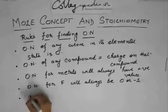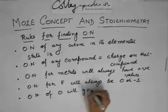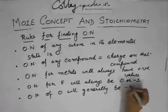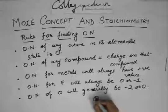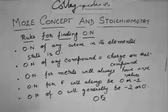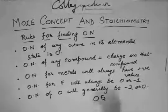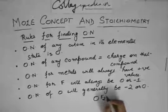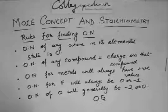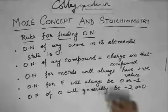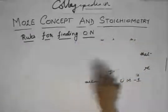The oxidation number of oxygen will generally be minus two or zero. But it can be plus two in the compound OF2. Although OF2 is not very stable because it has two very electronegative elements together causing a lot of repulsion, when it is formed, nothing can stop fluorine from having oxidation number minus one, so oxygen will have an oxidation number of plus two. These are the rules for finding the oxidation number, and now we will do a few questions on this.